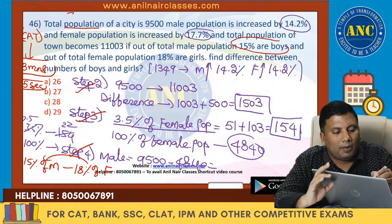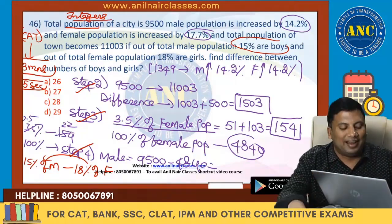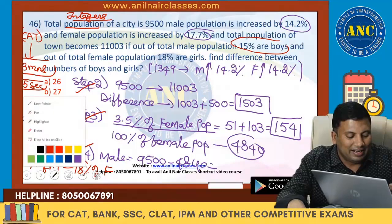Population value will always be in integers. Population value is always in integers. Read the question: find the difference between the number of boys and girls. Number of boys is 15% of male population, and girls are 18% of female population.